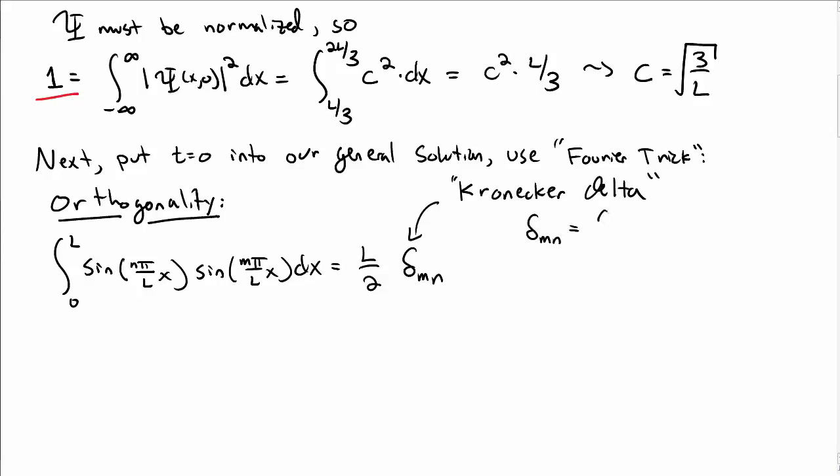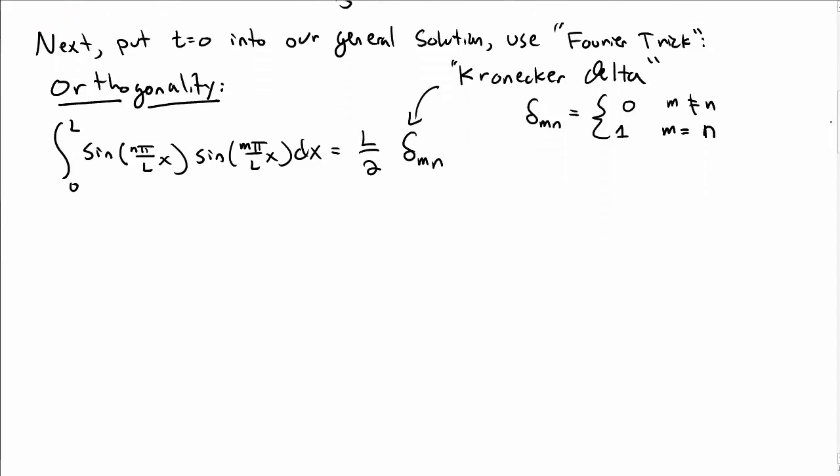And in particular, delta Mn is 0 if m is not equal to n, and 1 if m is equal to n. So it's worth checking this orthogonality if you haven't seen it before and explicitly doing it in a couple cases.